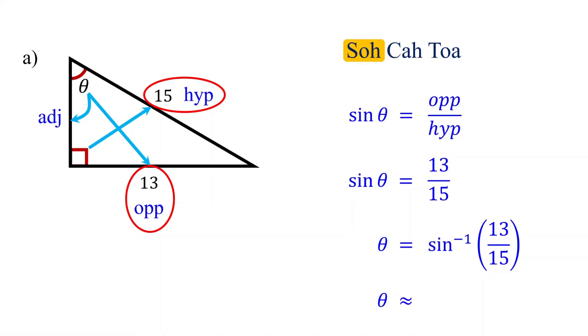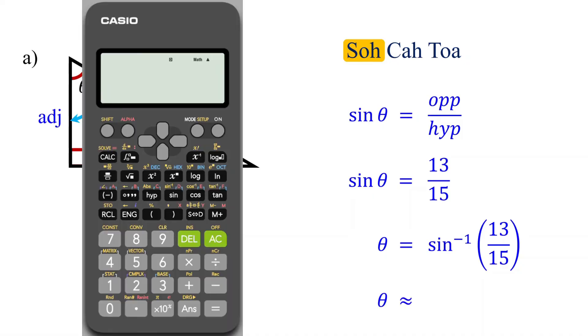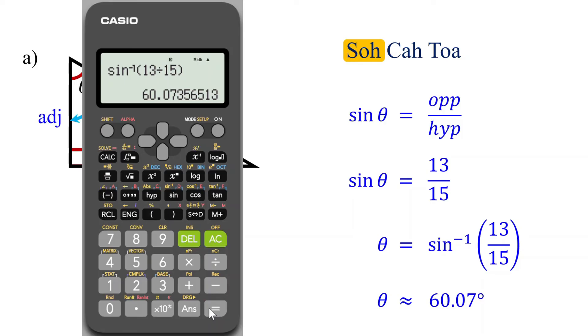Using a calculator, the inverse sine of 13 over 15 is approximately equal to 60.07 degrees.